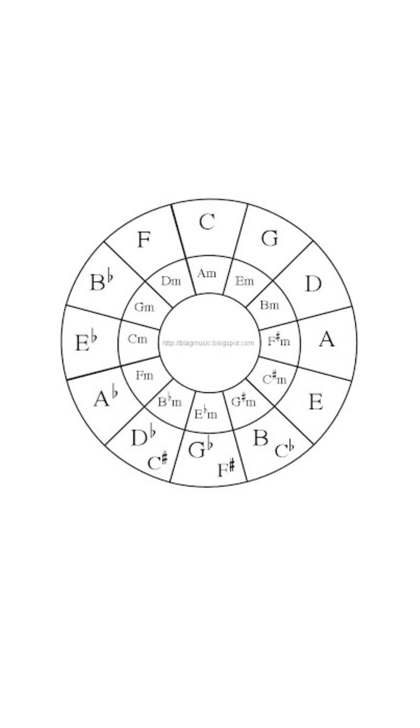To build the Pythagorean scale, we will start with our root note and multiply the ratio by 3 over 2 for each step. So starting with 1 for A, we get E as 3 over 2, and B as 9 over 4.